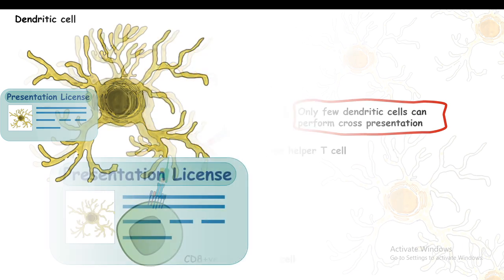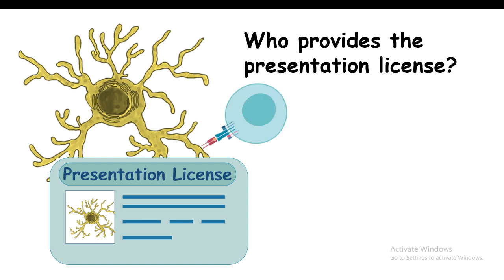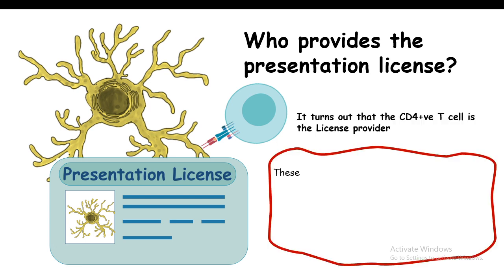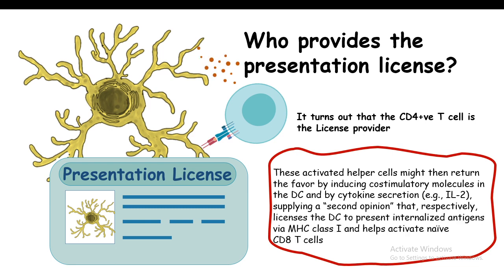Who is the license provider? It turns out the license provider is none other than the CD4 positive T helper cell. The CD4 positive T helper cell recognizes antigen on class 2 MHC, gets activated, and then returns the favor by secreting cytokines such as IL-2. This IL-2 binds to specific IL-2 receptors on the dendritic cell and augments the molecular machinery that helps in cross presentation.